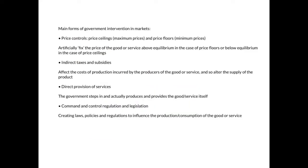In the IB Economics syllabus, there are four main forms of government intervention in markets. The first is price controls, using price ceilings (known as maximum prices) or price floors (known as minimum prices). Price controls artificially fix the price of the good or service — above equilibrium in the case of price floors, or below equilibrium in the case of price ceilings.